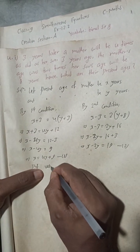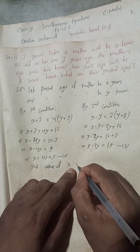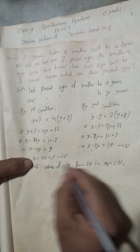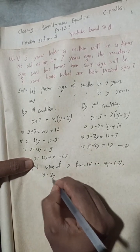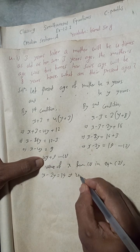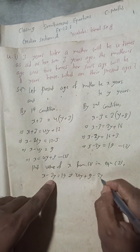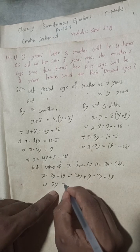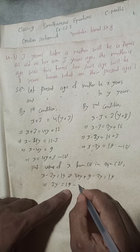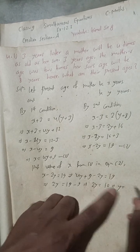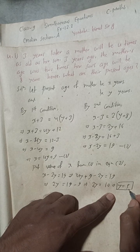Now put the value of x from equation 1 into equation 2. We have x − 2y = 19. Substituting x = 4y + 9: (4y + 9) − 2y = 19, which gives 2y = 19 − 9 = 10. Therefore y = 10 ÷ 2 = 5 years.